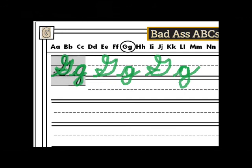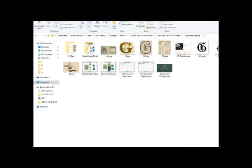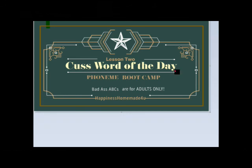That is it for our worksheets for the letter G. And we are going to see you in lesson two, which is the cuss word of the day, our phoneme bootcamp, where we learn any other sounds that the letter G makes. So far we know it's J and G. We'll see if there's any other sounds that the letter G makes and we're going to be having gimlets soon. And I have no idea what the cuss word of the day is. I can't remember what it is. We'll see you and find out.